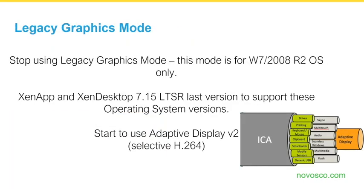For graphics: if you have Windows Server 2008 R2 or Windows 7, use Legacy Graphics mode — that's what it's for. If you have newer operating systems such as Server 2012 R2, Windows 8, or Windows 10, stop using Legacy Graphics mode as it's not supported by Citrix. Legacy Graphics mode is only supported up to 7.15 LTSR; after 7.16 and above, you have to start using Adaptive Display V2.